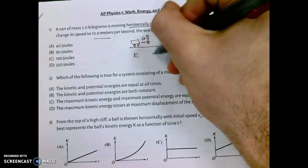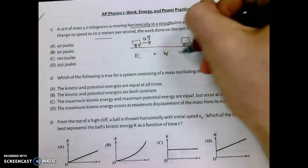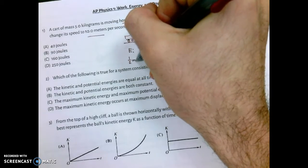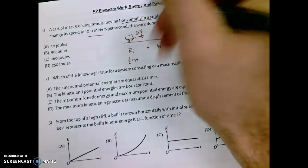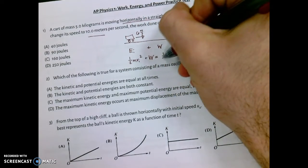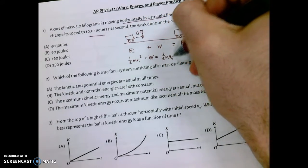I'll be able to talk about this thing's initial energy plus any work done, and that's going to equal the final energy. Or, one-half m v_i squared plus the work done that I'm looking for equals one-half m v_final squared.